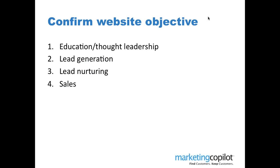Take a minute and write down what you think your website's objective is today. It can be one of four things: education or thought leadership, lead generation, lead nurturing, or sales. Keep in mind that if your goal is sales and you don't have an e-commerce component, that's going to be very hard to achieve. Think carefully about all of these things before deciding what data to look at and what to change.